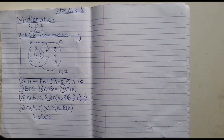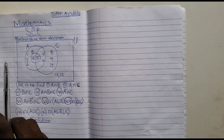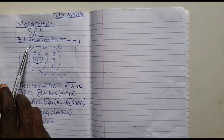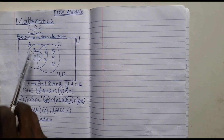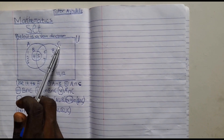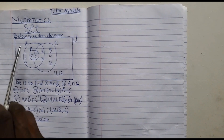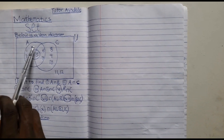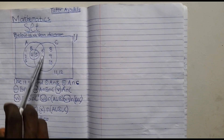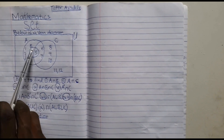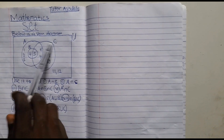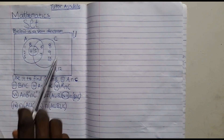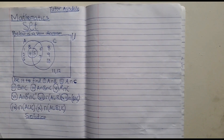Given a Venn diagram, beside this Venn diagram, we have set A, we have set B, and we have set C. Set A comprises of its own elements, set B comprises of its own elements, and set C comprises of its own elements.